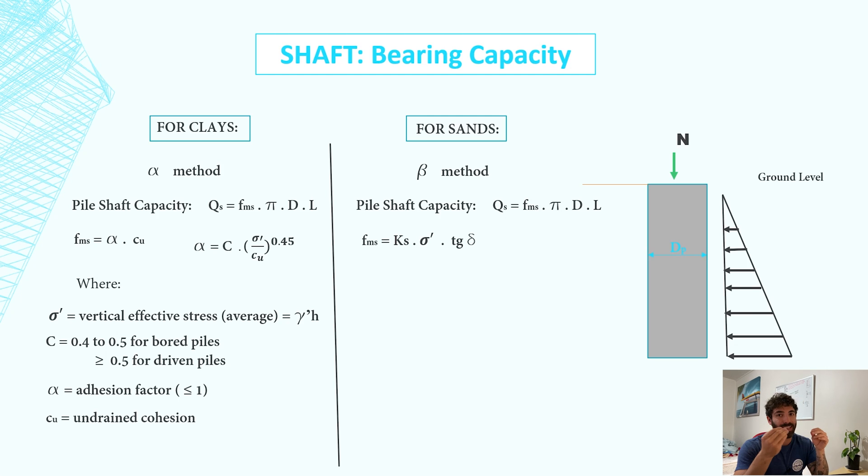f_ms is given by K_s times σ times the tangent of δ. The K value is the lateral earth pressure coefficient.